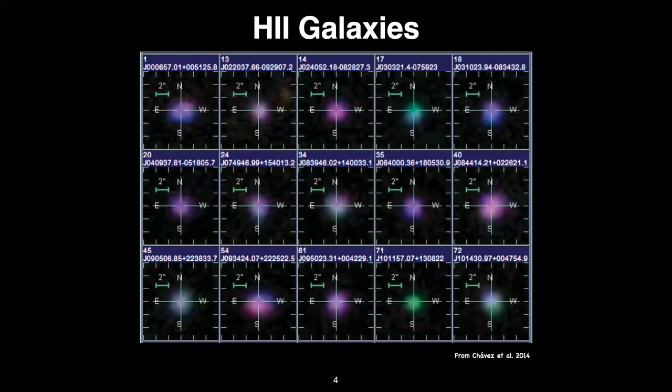Most of the galaxy is dominated by this current burst of star formation. They are called H2 Galaxies in analogy with the extragalactic H2 regions observed before. Since the 1980s, the name H2 Galaxies has been used, and we are keeping using that name — it's only a matter of style.